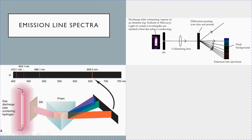So depending on the wavelength, the prism will split the light to different angles. So on the screen, the position of the light would depend on the wavelength. So what you see is a dark background, and only certain colors corresponding to the corresponding wavelengths will be seen.